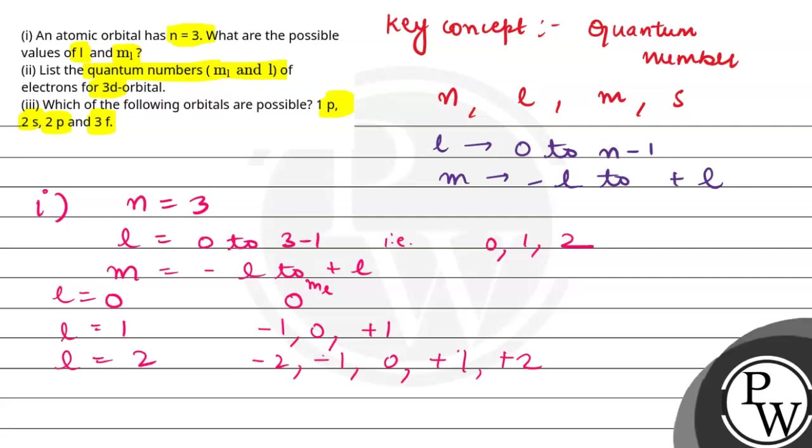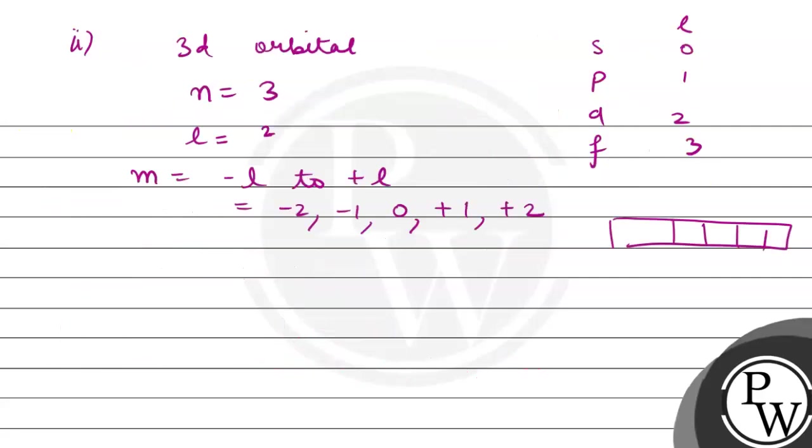Now we have the third option. Which of the following orbitals are possible? Let us tell which orbital is possible. First, we have 1p. If we are talking about n value 1, this means l value is 0 to n minus 1. That means l value is 0, which is s. So p is not possible. 1p is not possible.